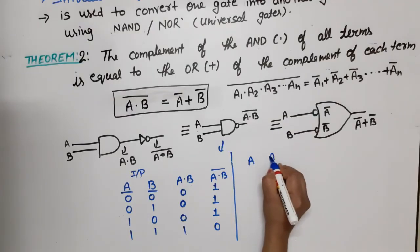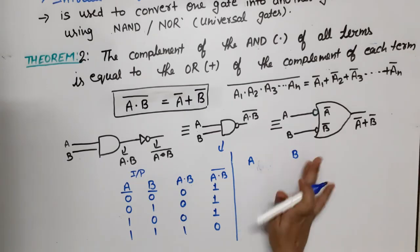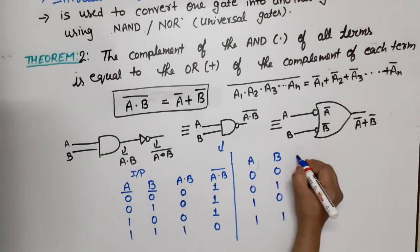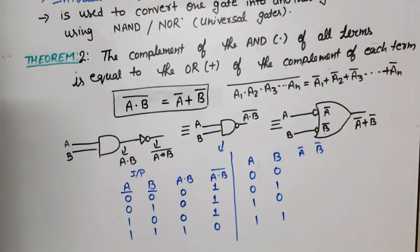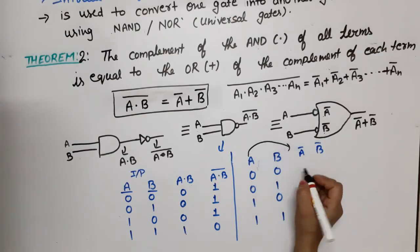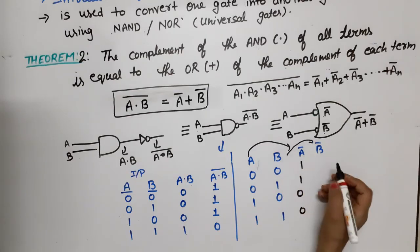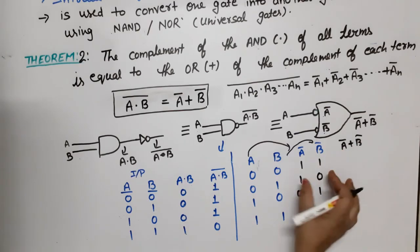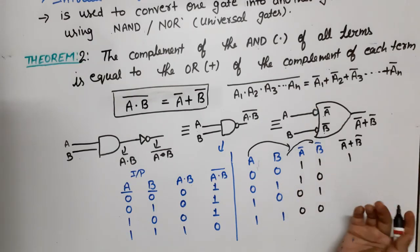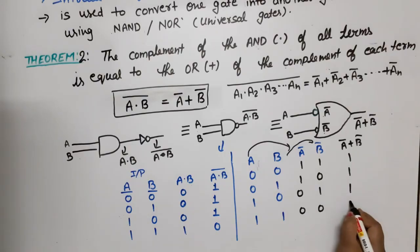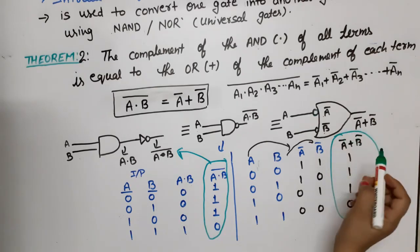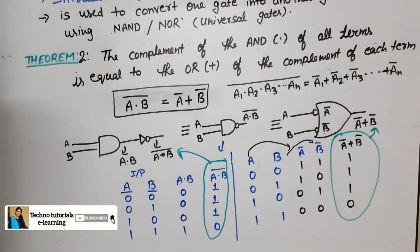Computing A bar plus B bar using OR operation: 1 plus 1 = 1, 1 plus 0 = 1, 0 plus 1 = 1, 0 plus 0 = 0. Comparing both outputs, they are the same — confirming that Theorem 2 is satisfied.